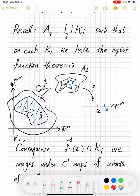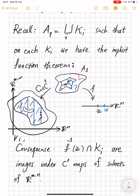The set A1. So this was just one of the k_i's, but A1 is covered by many other k's, and in each one of them, each fiber is a C^1 image of some subset of R^{m-n}.